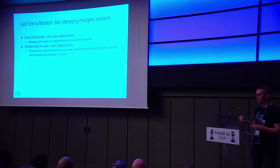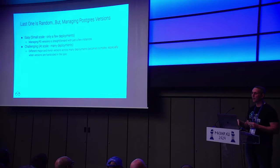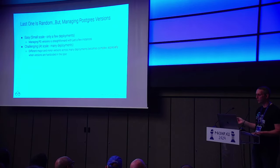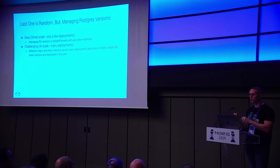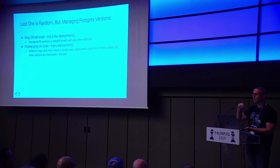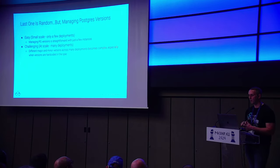Managing Postgres versions at scale can get complicated quickly. One concept is an image catalog — specifying which container image is needed for a given Postgres version — but you need to build in logic to avoid a thundering herd problem where updating the image catalog triggers rolling reboots across hundreds of Postgres databases simultaneously. You can also combine image catalogs with maintenance schedules. These are things to push operator developers on.